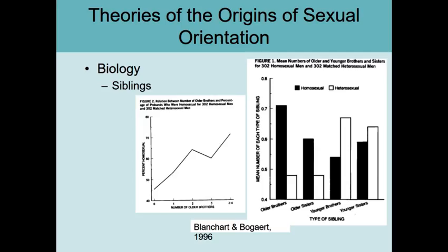All the black bars were homosexual men; all the white bars were heterosexual men. So the more older brothers that a man has, the more likely that man is to be homosexual.